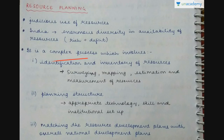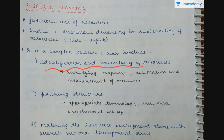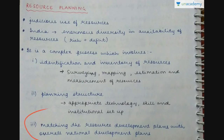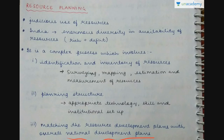Resource planning is a complex process which involves these steps: first, identification and inventory of resources done by surveying, mapping, estimation, and measurement; second, planning structure including use of appropriate technology, skills and institutional setups; third, matching the resource development plans with the overall national development plan — you cannot think only about development of a particular resource, you also have to consider the national development plan. Everything has to be balanced and go hand in hand.